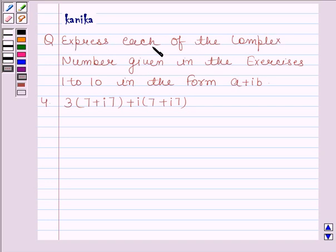The question says: express each of the complex number given in exercises 1 to 10 in the form A plus iota B. Fourth part is 3(7+i7) + i(7+i7).